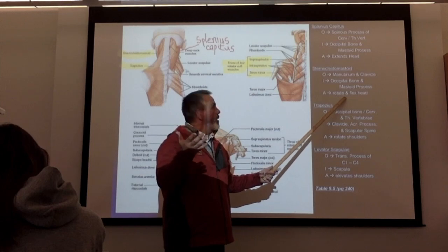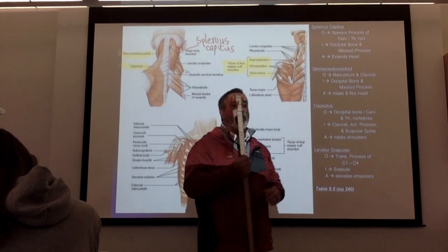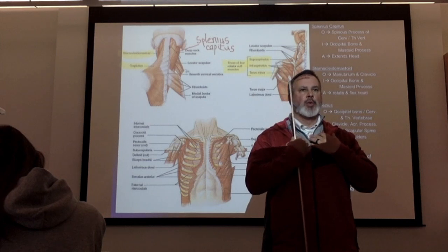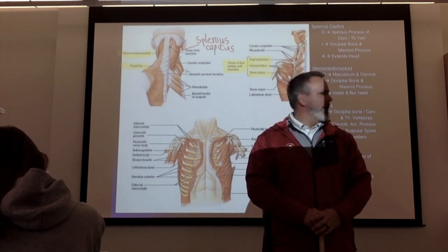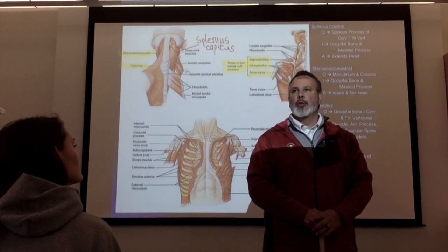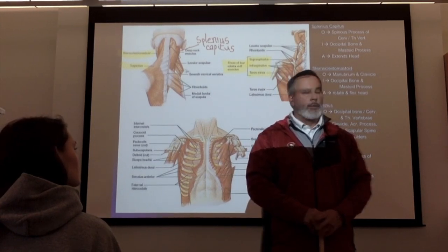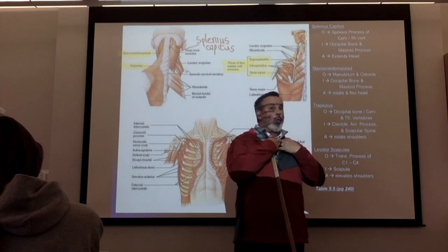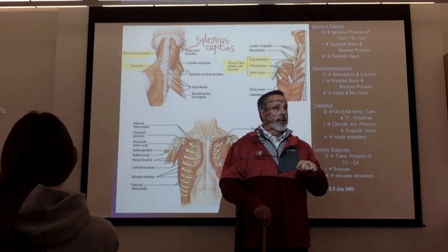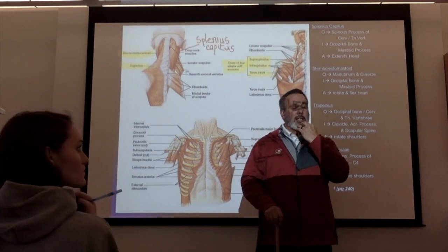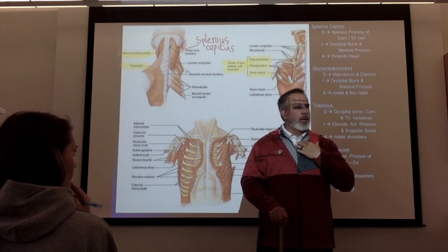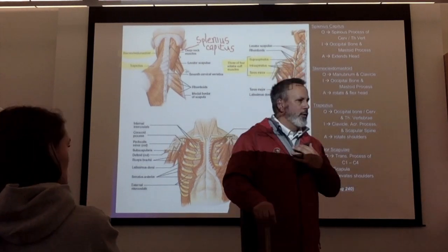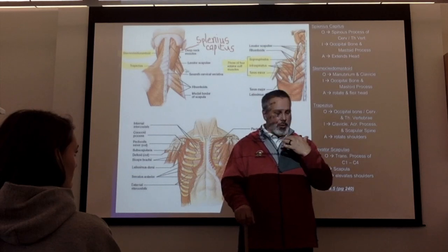The sternocleidomastoid rotates and flexes the head. If you use both at the same time, that's flexing the head — you're just looking down. If you use one or the other, you rotate your head side to side. There are two of them, one on each side, so they are paired muscles.